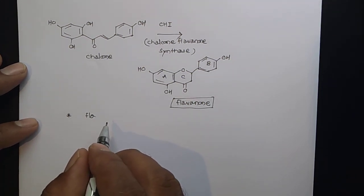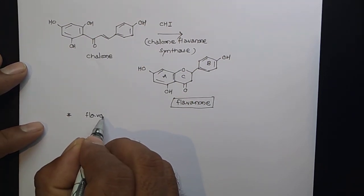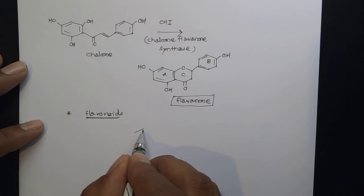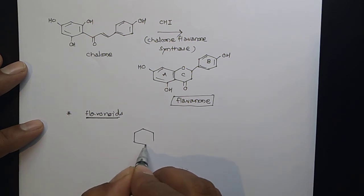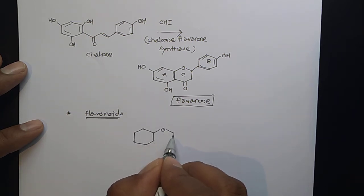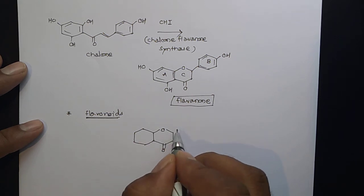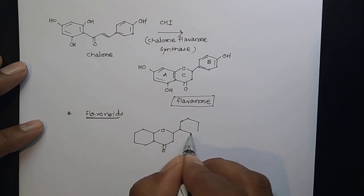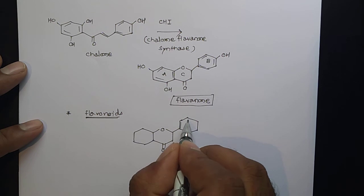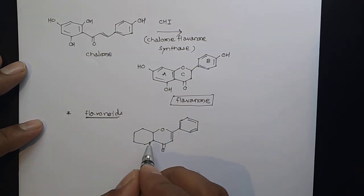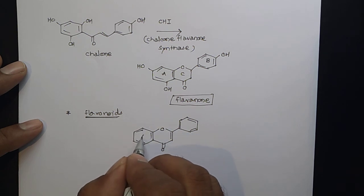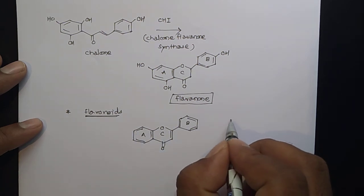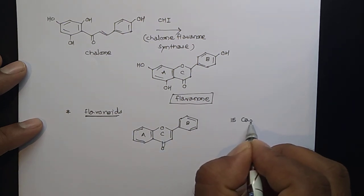I will write down something about flavonoids. In the flavonoid, this is the basic structure and so many derivatives are there. There are three rings: A, B, and C. How many carbons are there in total? 15 carbons.